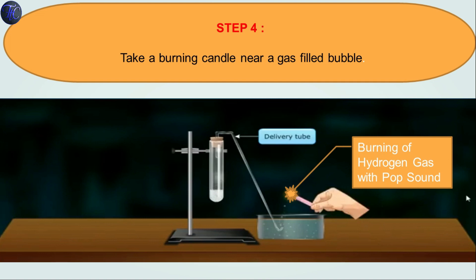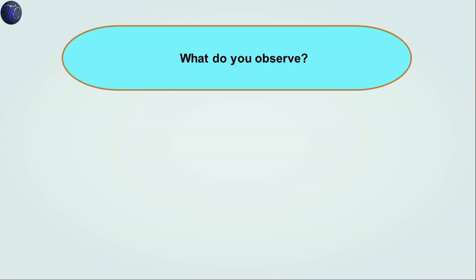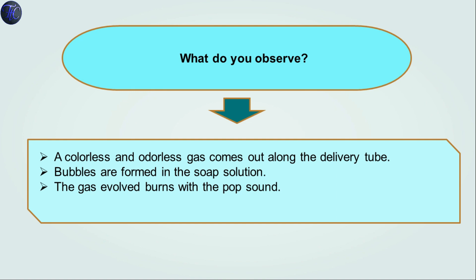Step 4: Take the burning candle near the gas-filled bubbles. What we will observe here is burning of hydrogen gas with a pop sound and the candle will put off. A colorless and odorless gas comes out along the delivery tube. Bubbles are formed in the soap solution. The gas evolved burns with a pop sound which shows the presence of hydrogen gas.